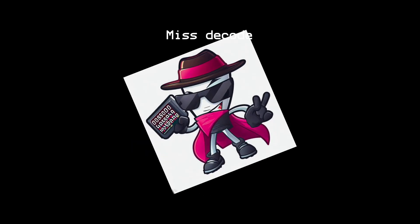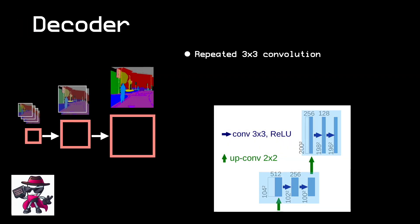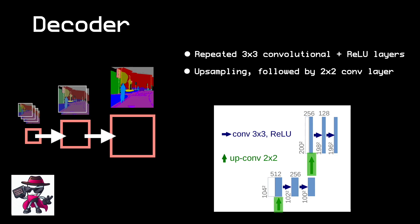Now let's have a look at the next part of the network, the decoder. The decoder, in many ways, is the reverse of the encoder. It is also made up of a series of 3x3 convolutional layers, each of which is followed by the ReLU activation function. Instead of down-sampling with max pooling, the decoder up-samples the current set of features and then applies a 2x2 convolutional layer that halves the number of channels. The up-sampling operation is used to restore the spatial resolution of the features that were lost during the encoding phase.